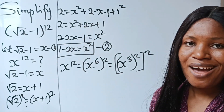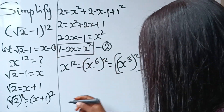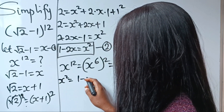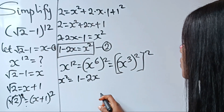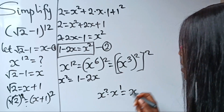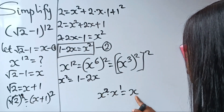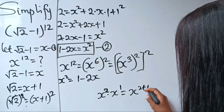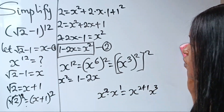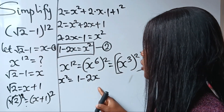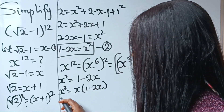We have x squared, so we can easily get x to the power of 3. I'm going to copy equation 2 the other way around: x squared is equal to 1 minus 2x. My intention is to get x to the power of 3, and I know that when I multiply x squared by x, I get x^3, according to the law of indices — same base, add the powers: 2 plus 1 gives x to the power of 3. So I'm going to multiply both sides by x, giving: x³ = x(1 minus 2x).